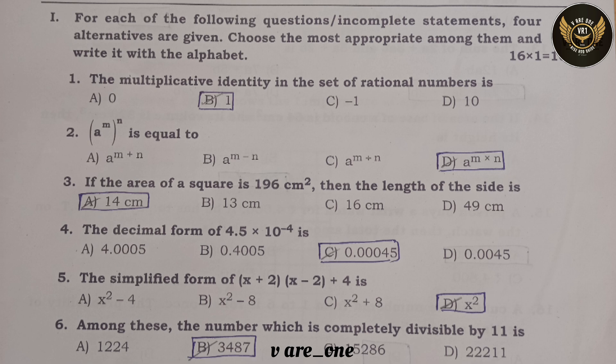Fifth question: the simplified form of (x + 2)(x − 2) + 4 is option D: x².